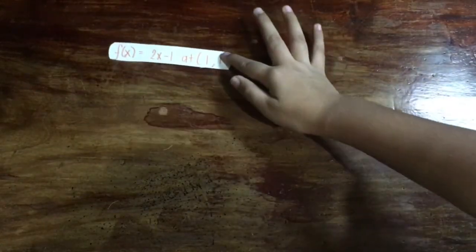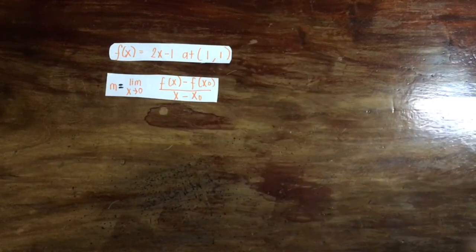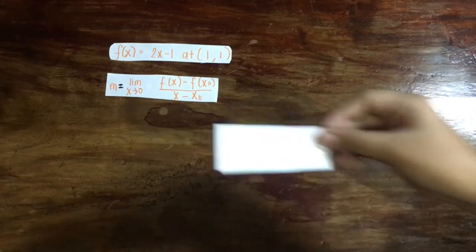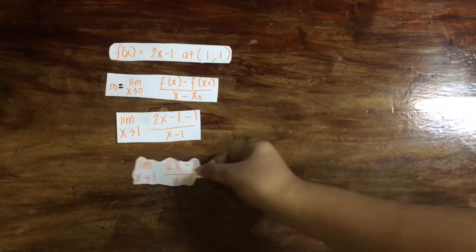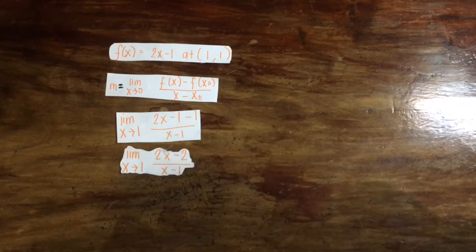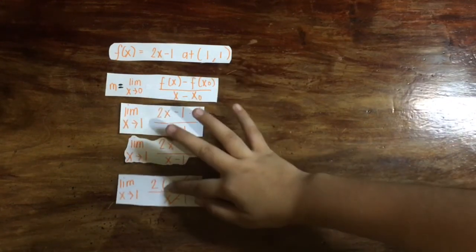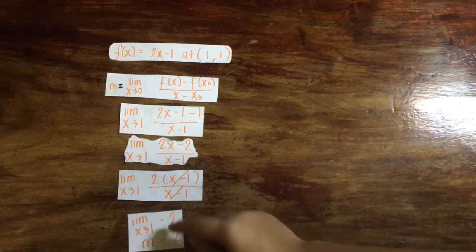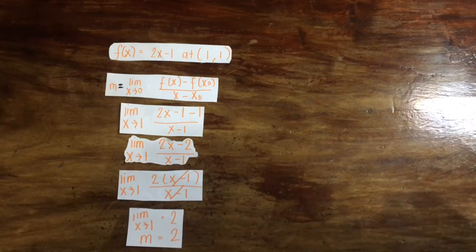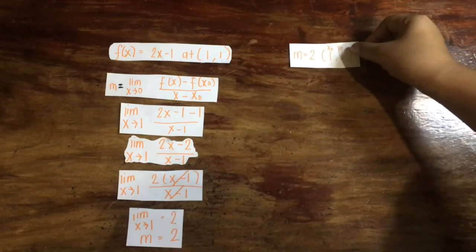Given the function 2x minus 1 at point (1, 1), we find the slope using the slope of a line formula, then substitute the values. As the function approaches 1, we get 2x minus 2 over x minus 1. We factor the numerator to get 2 times x minus 1 over x minus 1, then cancel out the same terms. So our slope m equals 2.